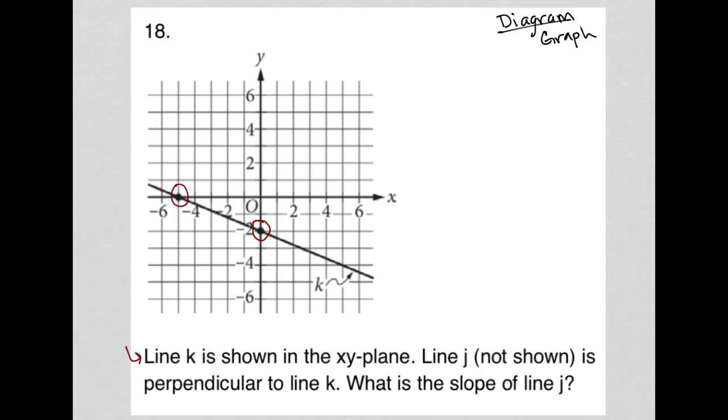The question says line k is shown in the xy-plane. Line j, not shown, is perpendicular to line k. What is the slope of line j? Okay, so whenever you have perpendicular slopes, let me just write a note for you here so you can remember it or write it in your notes if you like. Perpendicular lines have opposite reciprocal slopes.